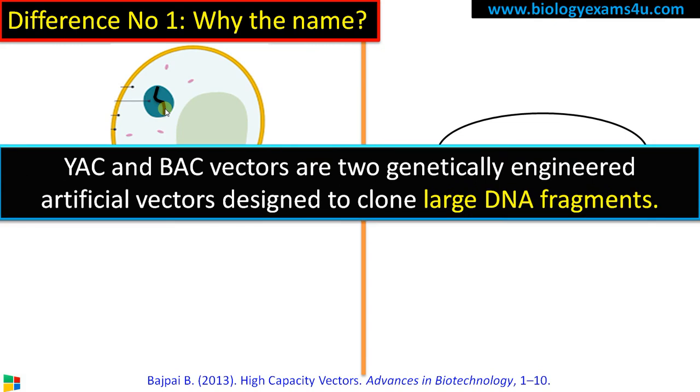Both YAC and BAC vectors are genetically engineered artificial vectors designed to clone large DNA fragments. Vector is any DNA molecule to which our gene of interest is integrated for cloning or transforming into the host cell.